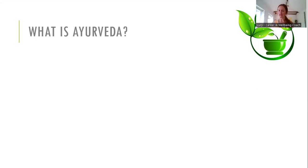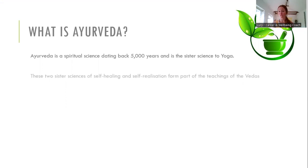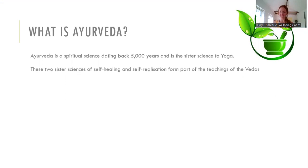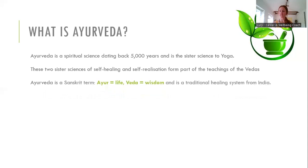These first few slides introduce some concepts that might feel a bit heavy — please bear with me, because by the third or fourth slide it's really going to start to make sense. So, Ayurveda is a spiritual science. It dates back 5,000 years and it's actually the sister science to yoga. We've got the science of self-healing, which is Ayurveda, and self-realization, which is yoga. Ayurveda is a Sanskrit term: 'ayur' means life and 'veda' means wisdom, so it's translated as the wisdom of life.